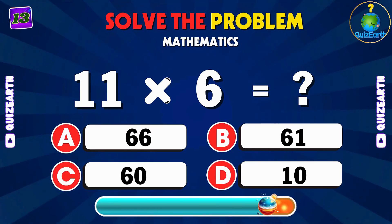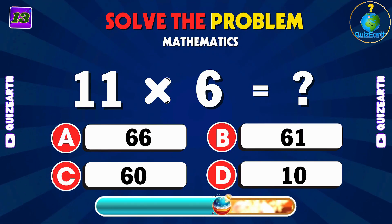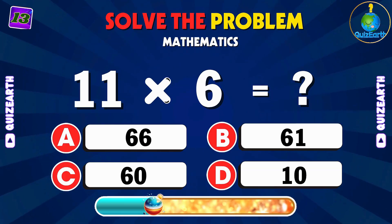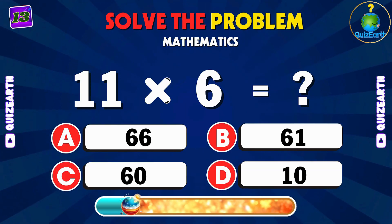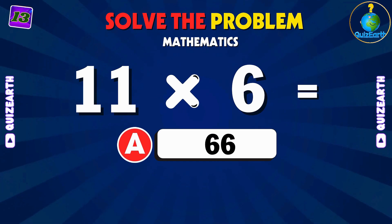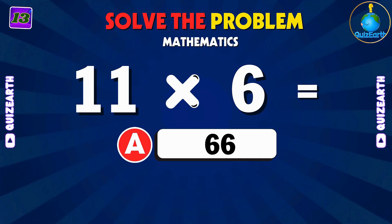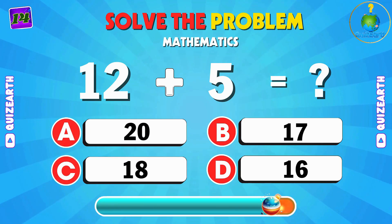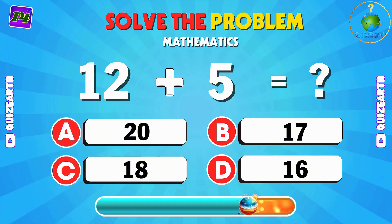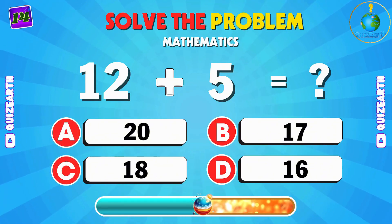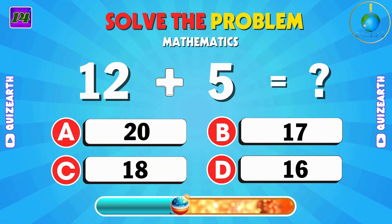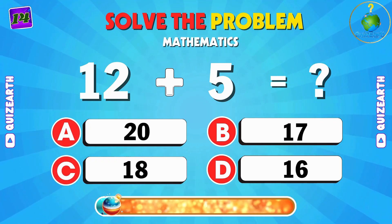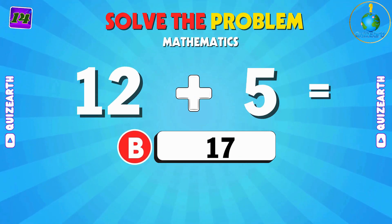Multiply 11 by 6 — show your math skills. A: 66. Add 12 and 5 — come on, quick math. B: 17.